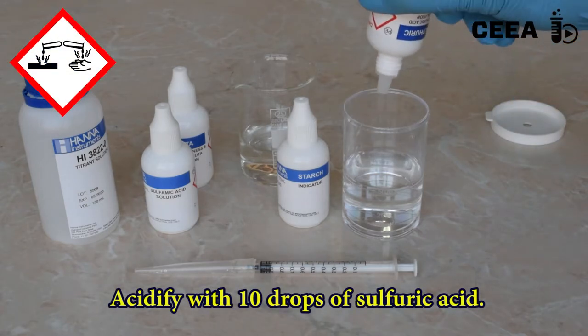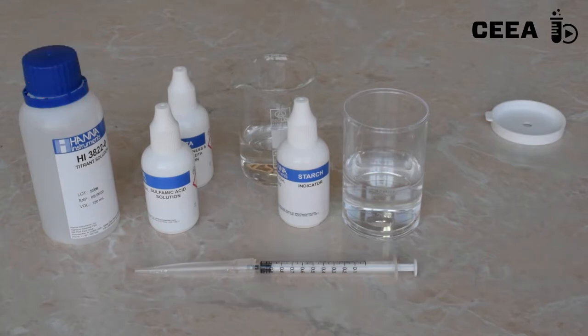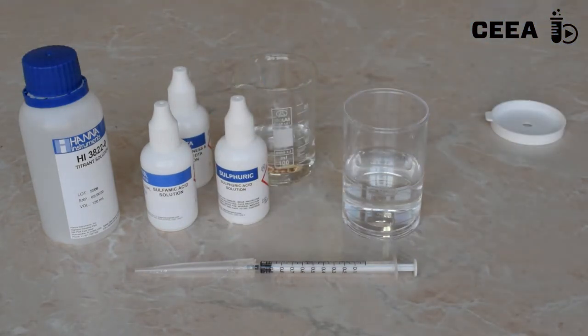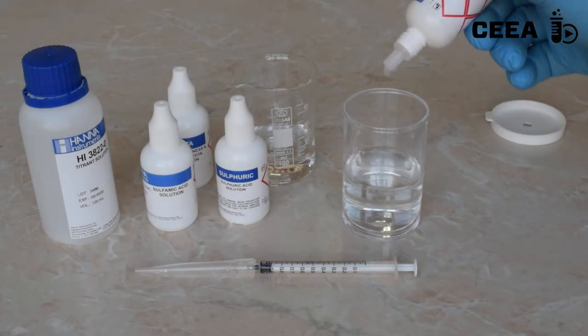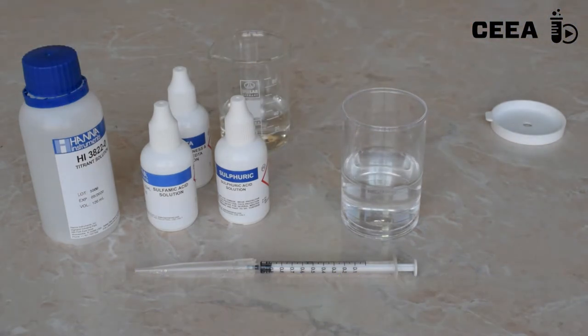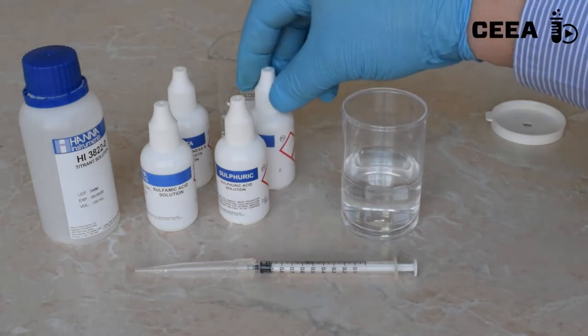The mixture is acidified with 10 drops of sulfuric acid. A fourth solution, a solution of starch, is used as indicator for the end point of the titration.